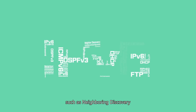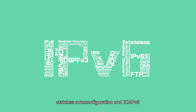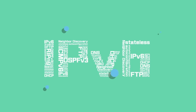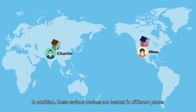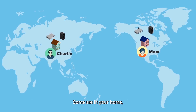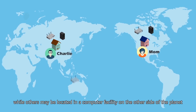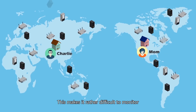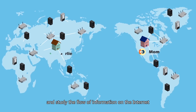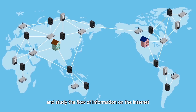The protocols used with IPv6 are highly complex, such as neighbor discovery, stateful auto-configuration, stateless auto-configuration, and ICMPv6. In addition, these various devices are located in different places — some are in your home, while others may be located in a computer facility on the other side of the planet. This makes it rather difficult to monitor and study the flow of information on the Internet.